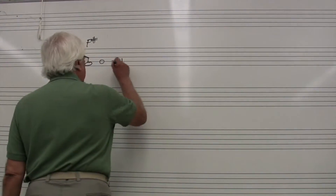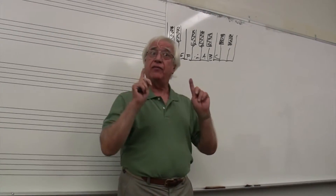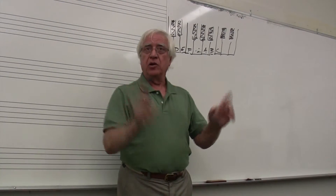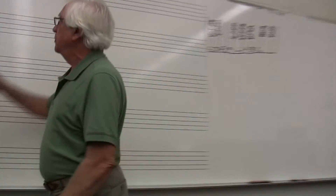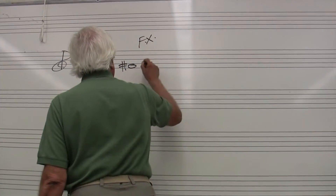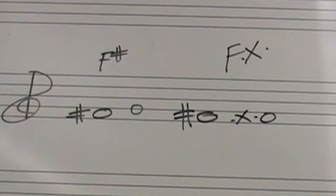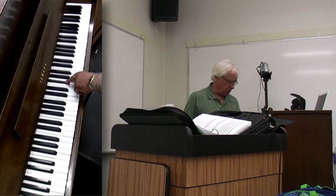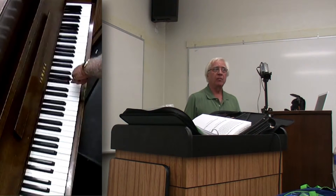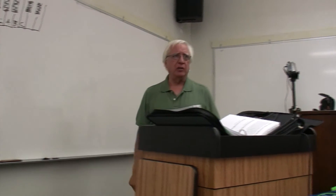Now I want a chromatic half step above F-sharp. Which would mean it has to have the same kind of name — some kind of F. So F-double-sharp. That's a chromatic half step. Let me play them both for you. This is F-sharp. Here is my diatonic half step: G. Here's F-sharp again. Here is my chromatic half step: F-double-sharp. The difference is what we call it — that's all we're talking about.